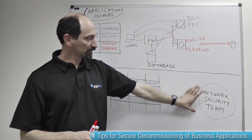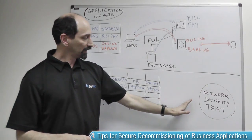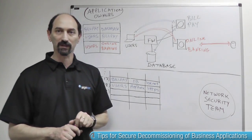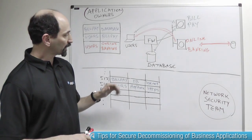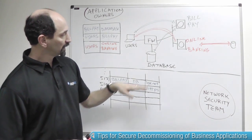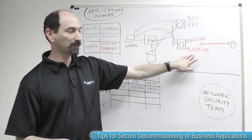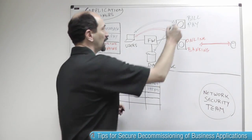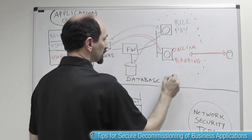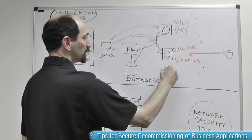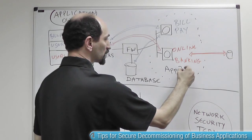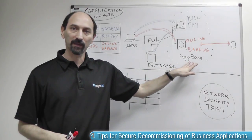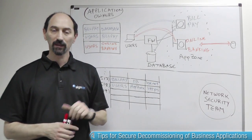From the network security team's perspective, they need to write policy in the firewall that allows all these communication patterns to cross the firewall securely. They notice that the bill pay server and the online banking server are both on the same network segment with related IP addresses, so it is very natural to define an application zone and use that definition to make the security policy more compact.